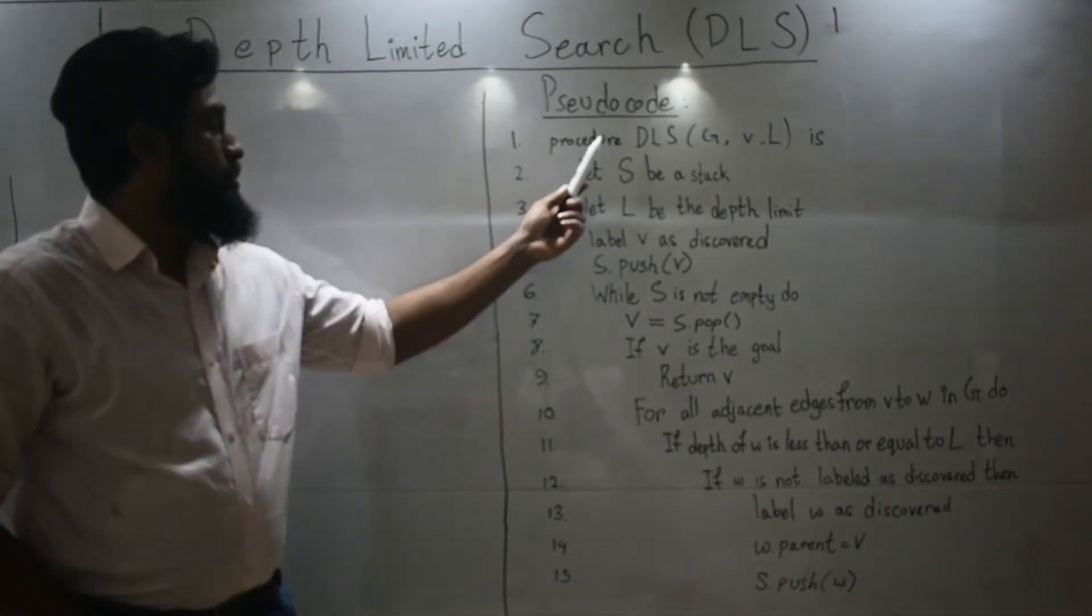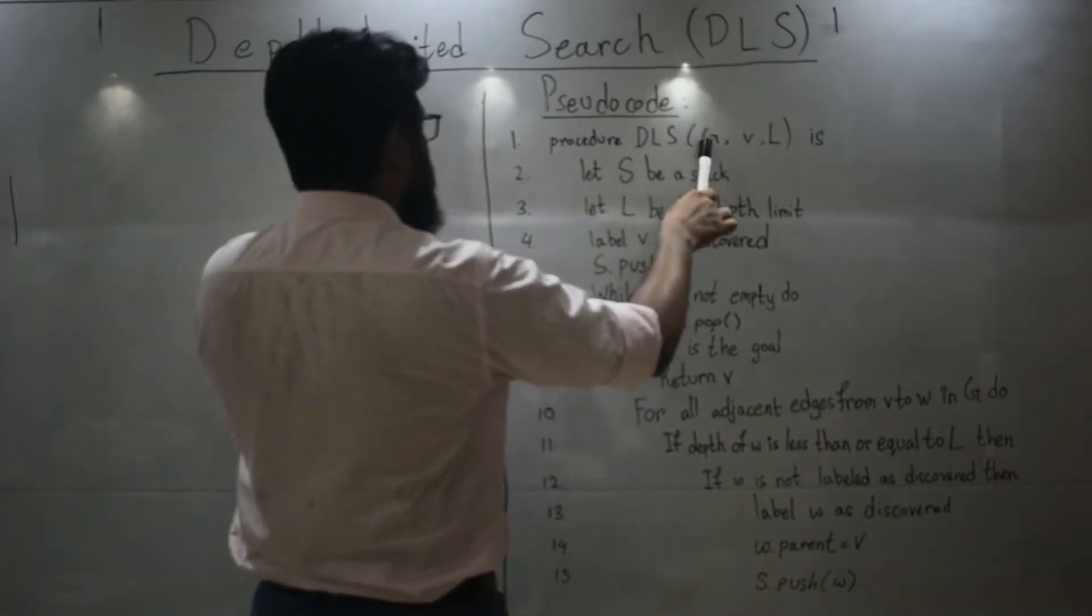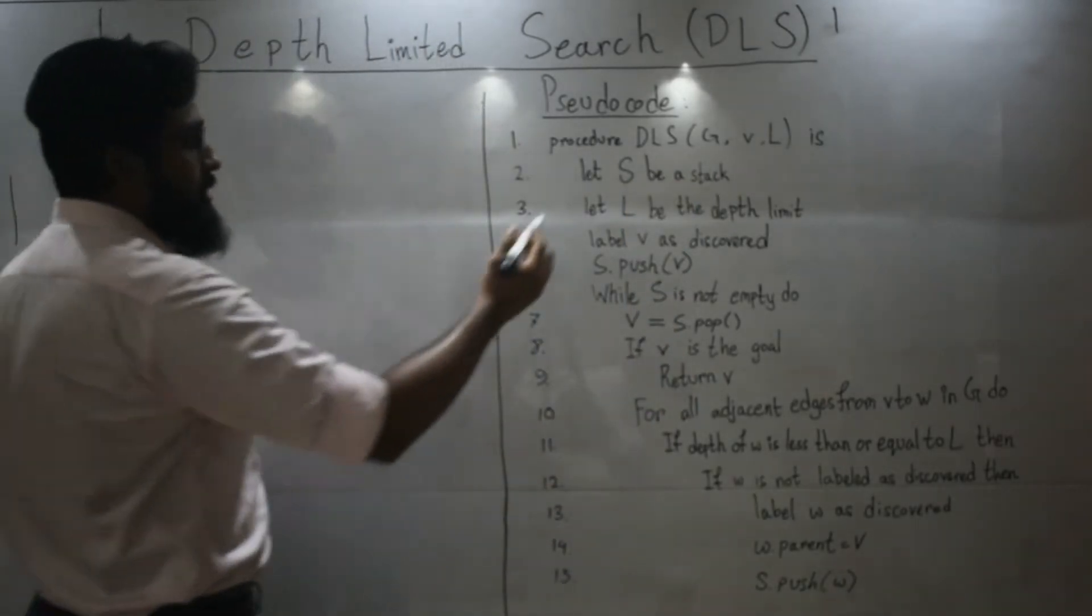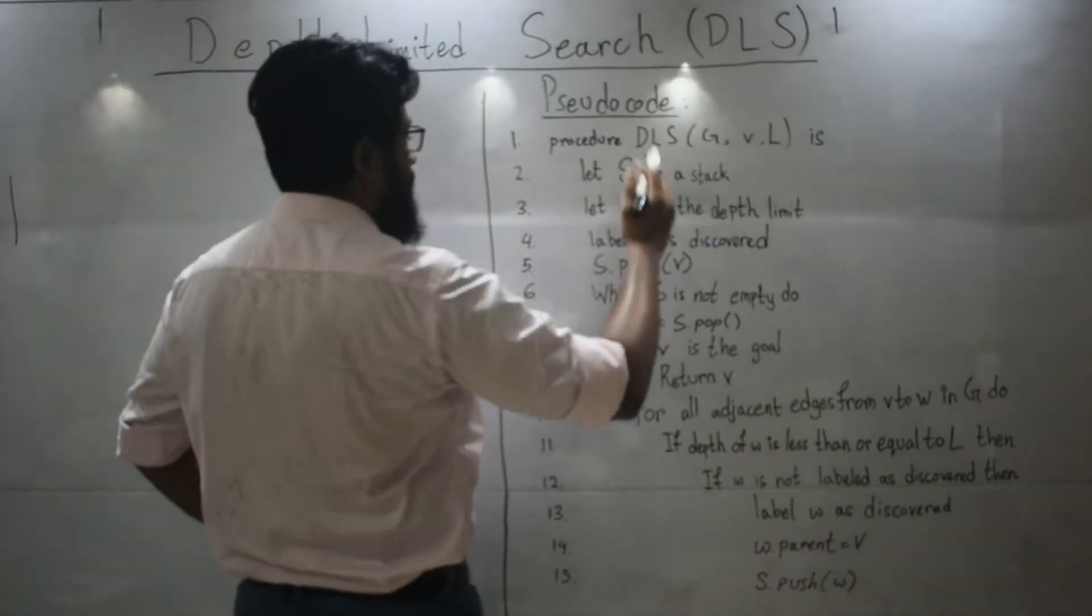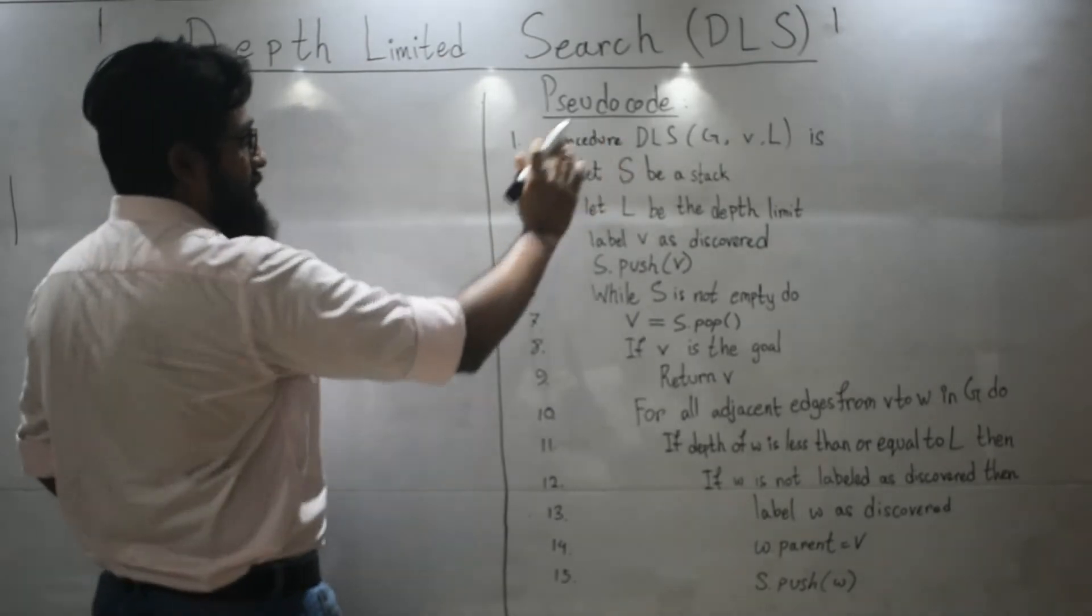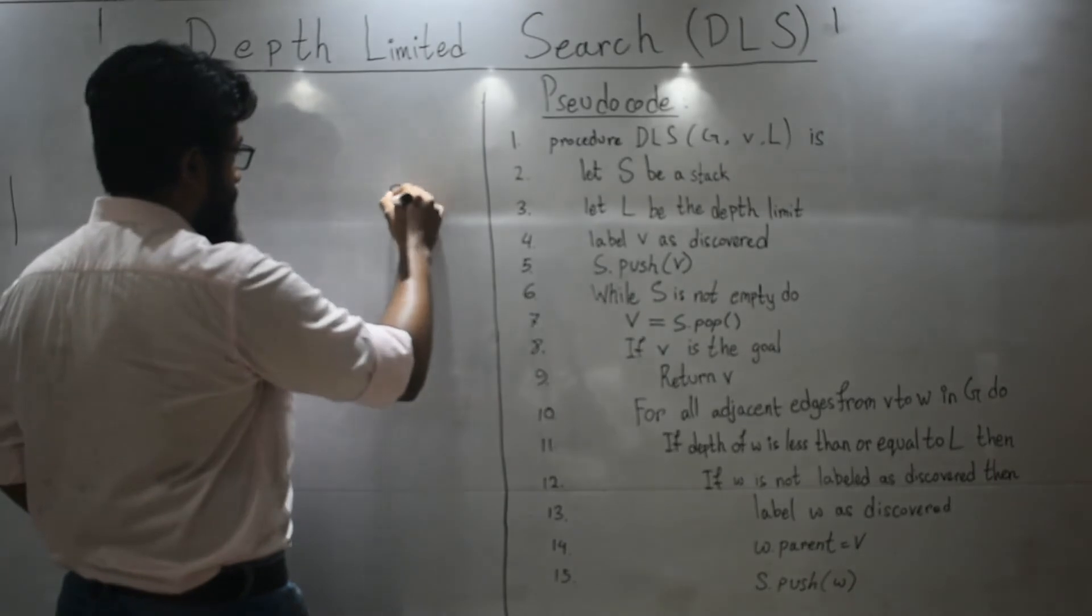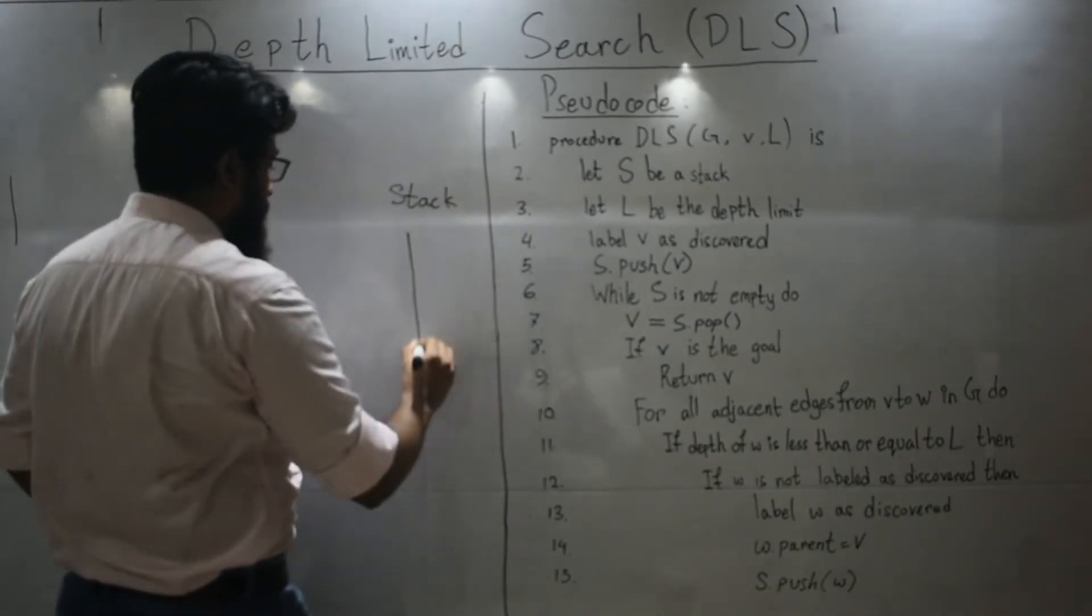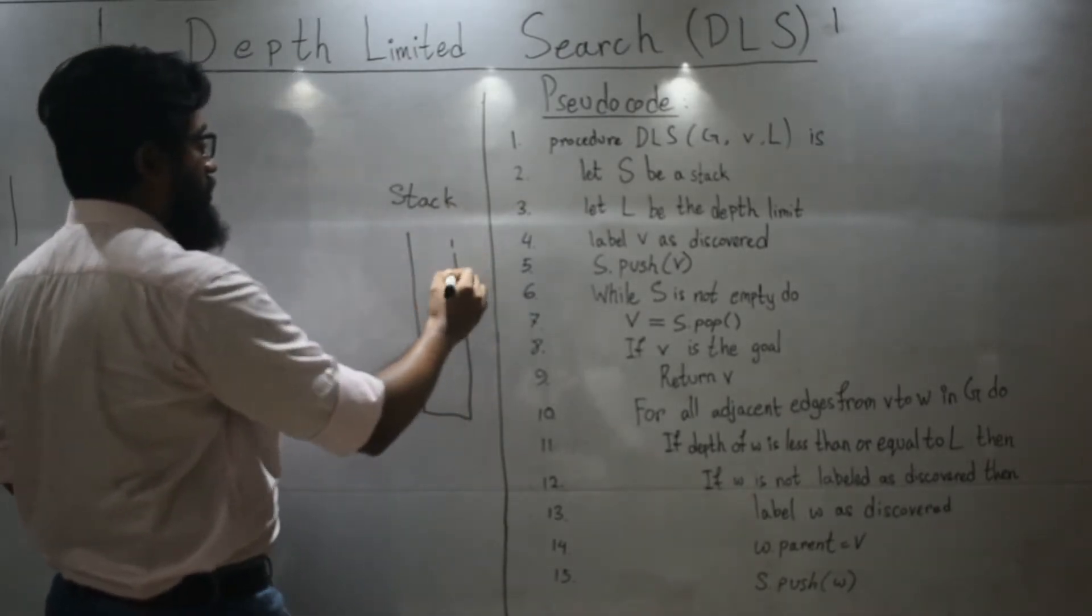So, procedure, depth limited search, here, G is the graph, V is your starting node or root node, and L is your limit. So, let S be a stack. So, let's have a stack over here.